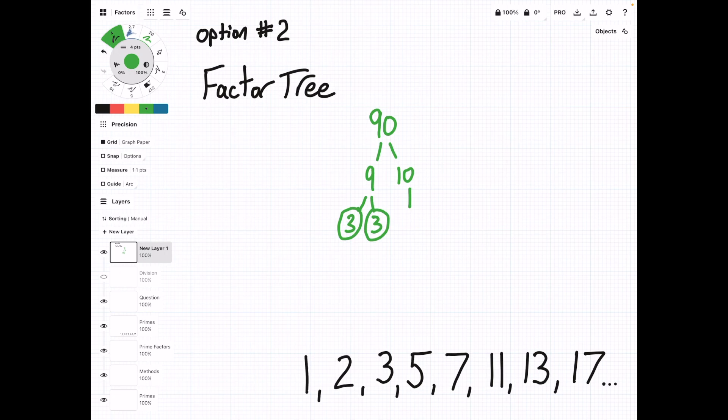So now we can go over to the other branch. We have 10 is equal to 5 times 2. And again, we see both 5 and 2 in our prime list. So we circle them. And so at the very end, we just see that all of the prime factors are 2, 3, 3, and 5.